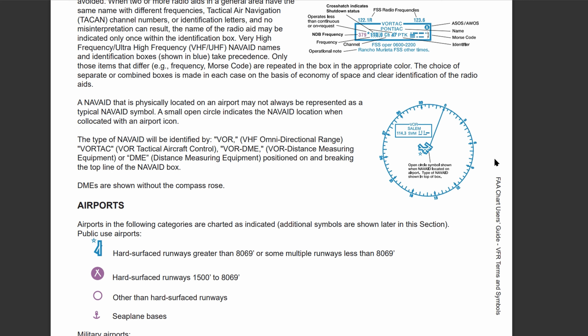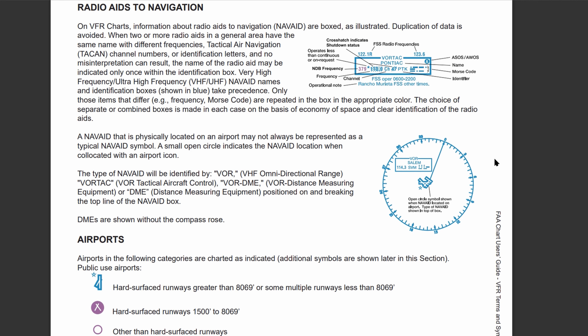A VOR is a VHF omnidirectional range. A VORTAC is a VOR tactical aircraft control. VOR-DME is VOR distance measuring equipment, and DME is just distance measuring equipment without the VOR part. So those are the four different types of navigational aids.